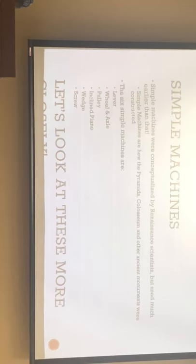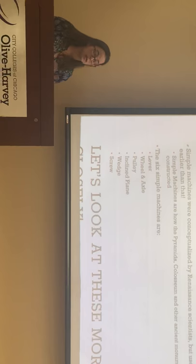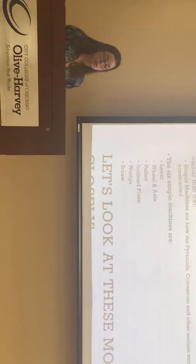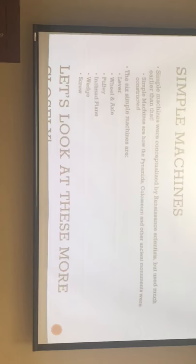This leads us into simple machines. These were conceptualized by Renaissance scientists but used in actuality much earlier — for example, simple machines are how the pyramids, the Colosseum, and other ancient monuments were constructed. Our six simple machines are the lever, the wheel and axle, the pulley, the inclined plane, the wedge, and the screw.